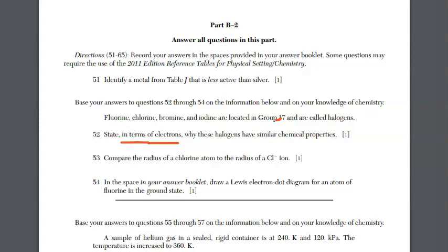Questions 52 through 54. It says fluorine, chlorine, bromine, and iodine are located in group 17 and are called halogens. In question 52, state in terms of electrons. Now this is important. Anytime you see in terms of, make sure you have electrons in your answer. Why these halogens have similar chemical properties.